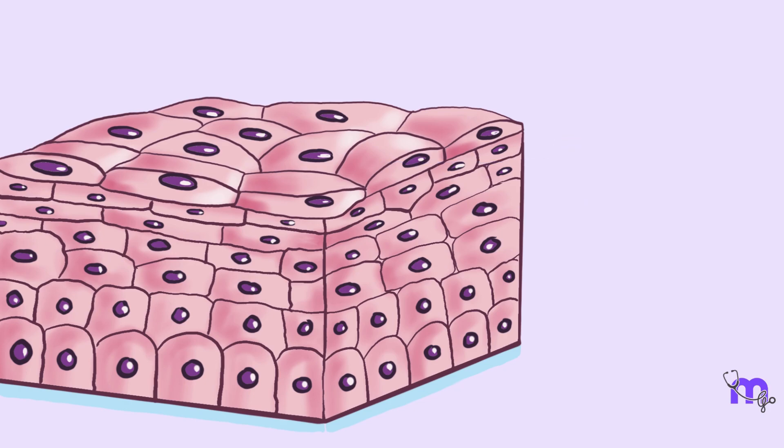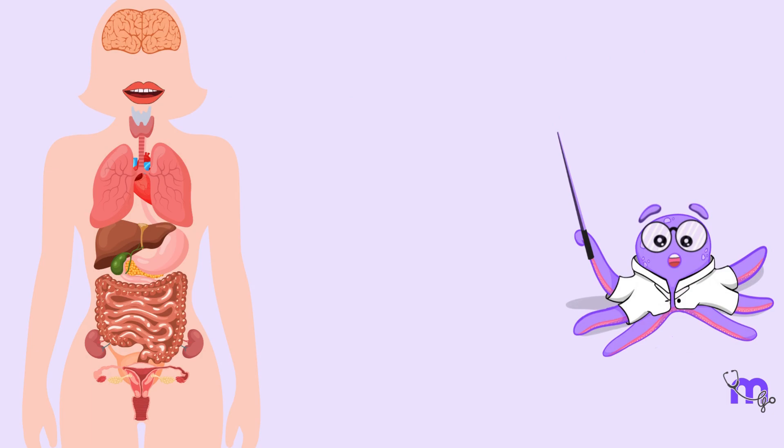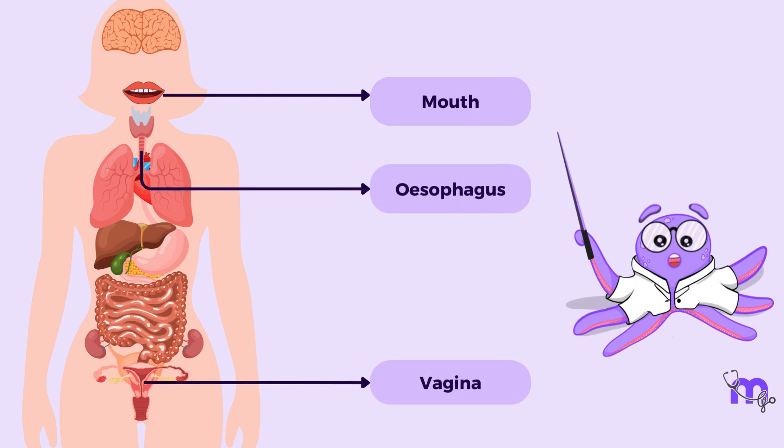All cells in the various layers are firmly attached to provide support and structure and are therefore found in areas that are subjected to repeated mechanical stresses like the mouth, vagina, esophagus and skin.